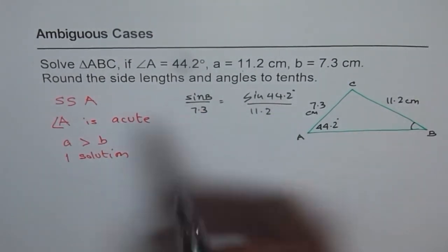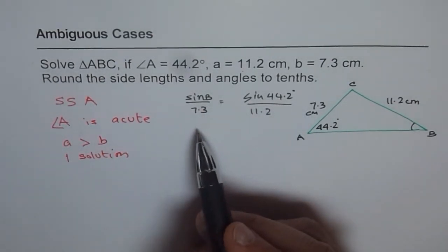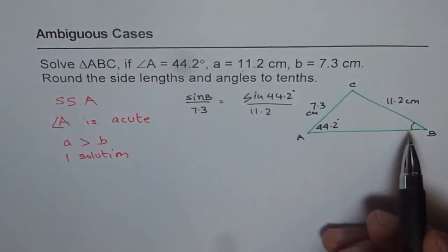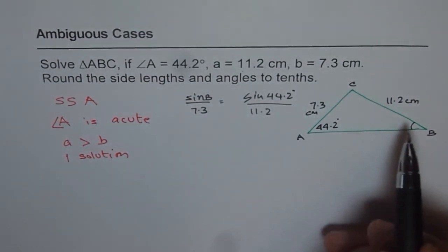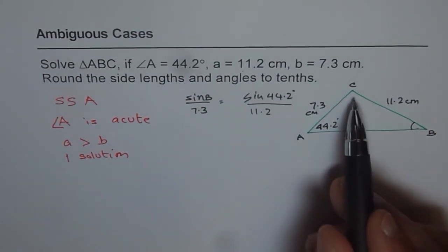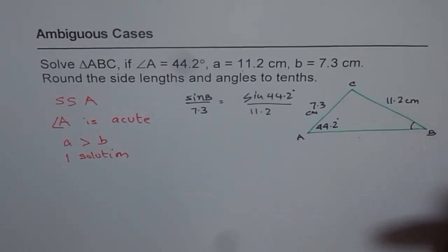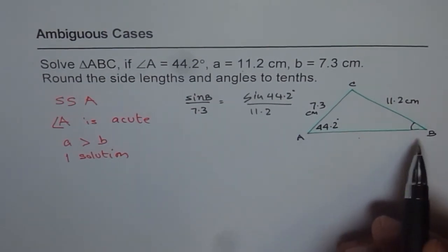Now from here just cross multiply, get sine B and then B will be sine inverse, find B. Once you have found B, 180 minus sum of A and B will give you angle C. Then again apply the sine law to find side AB.